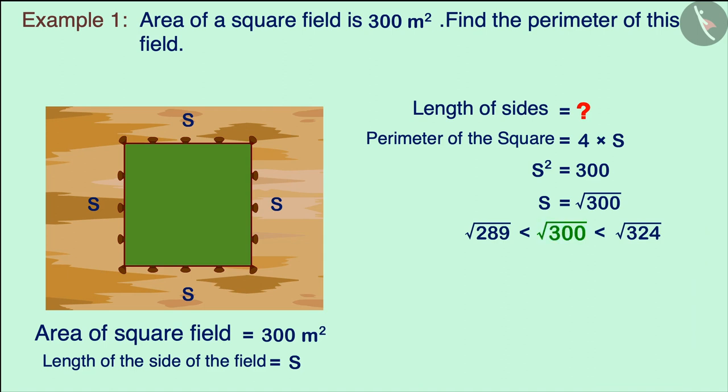Therefore, the square root of 300 will also be between the square root of these two numbers. The square root of 289 is 17 and the square root of 324 is 18.